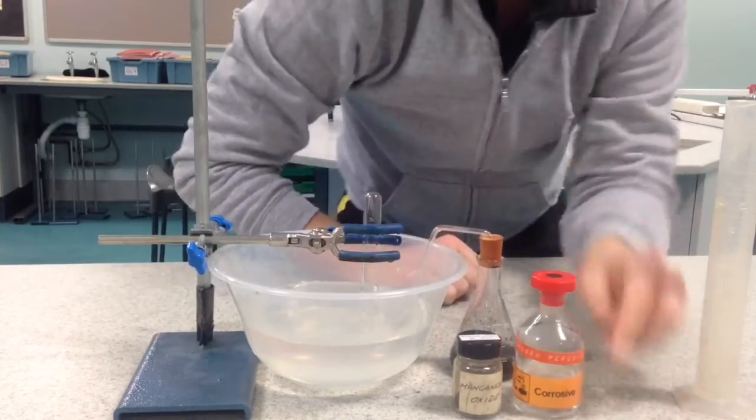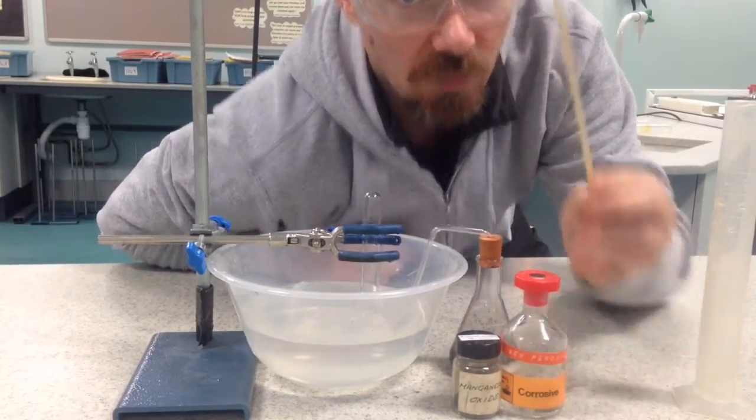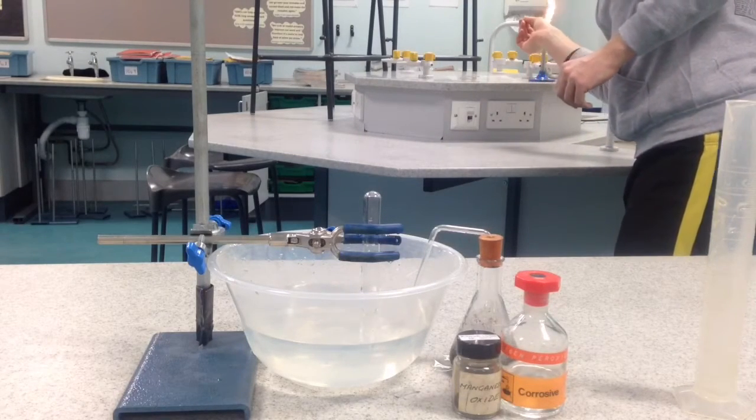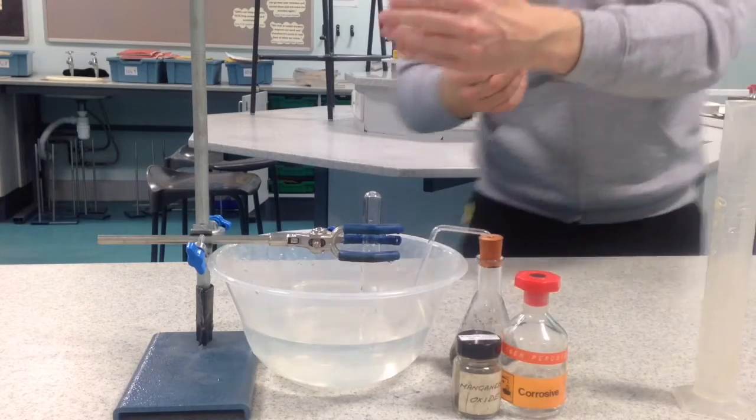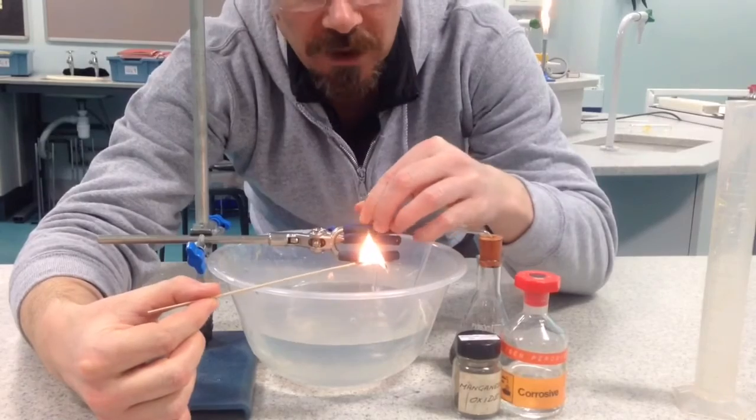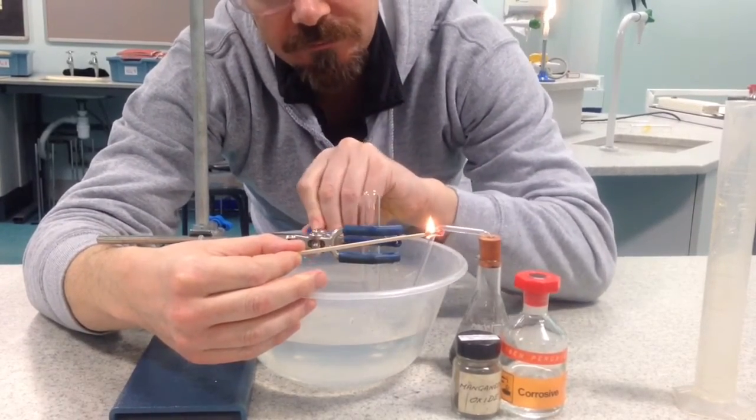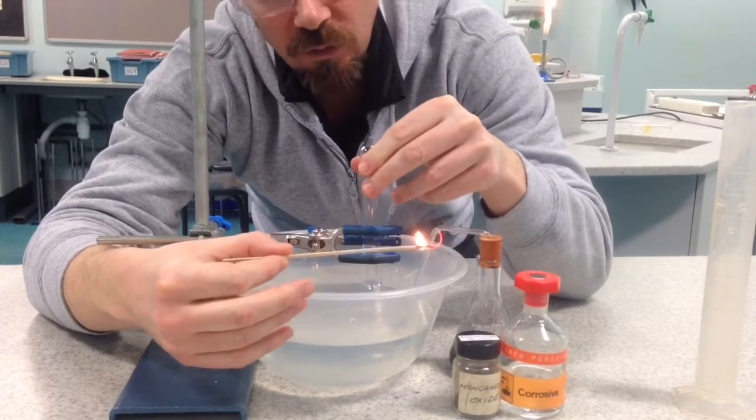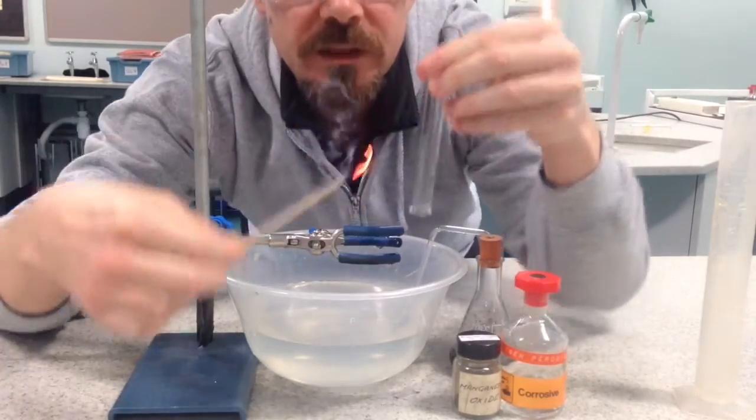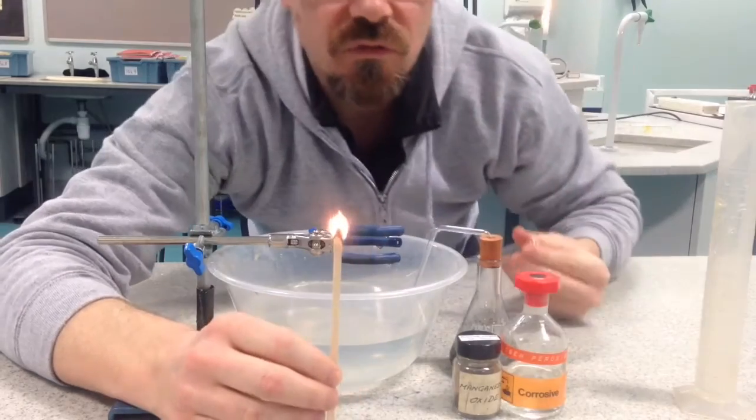You need a splint that's been lit but then recently blown out. So I've got my lit splint, I've got my test tube with oxygen in which I will hold upside down so as not to let any of the gas escape. I blow this out and I put it into the test tube and it should relight.